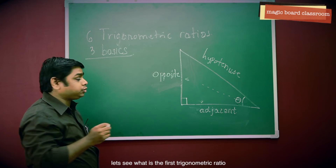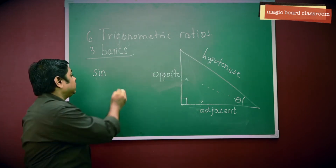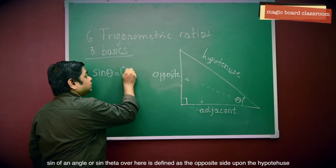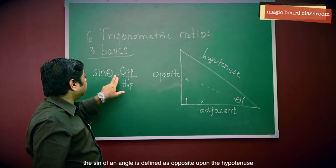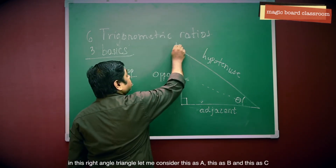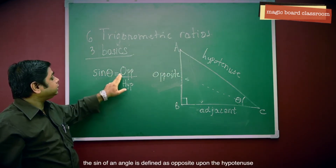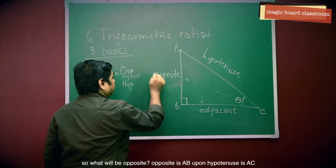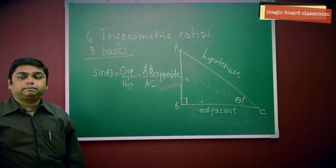What is the first trigonometric ratio? The first trigonometric ratio is called sine. Sine of an angle, or sin theta, is defined as the opposite side upon the hypotenuse. In this right angle triangle, let me consider this as A, this as B, and this as C. So sin theta equals opposite upon hypotenuse, which is AB upon AC.